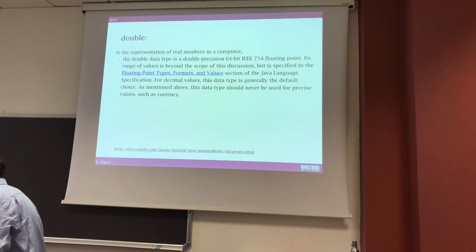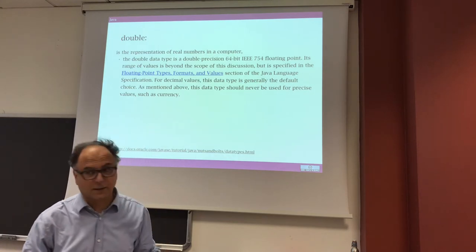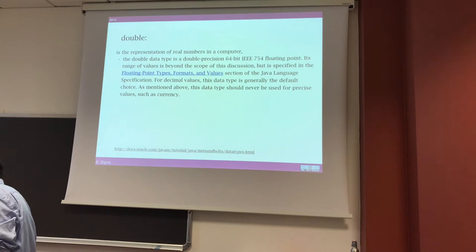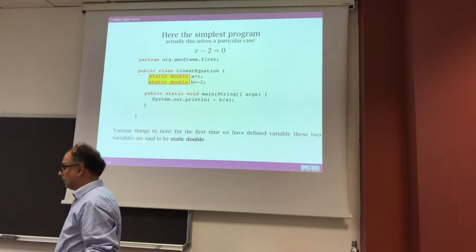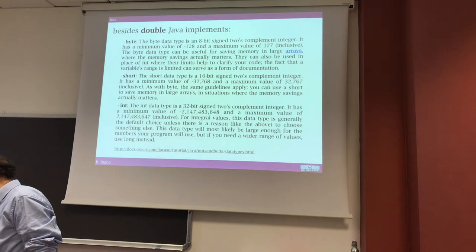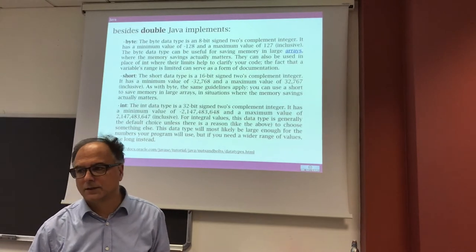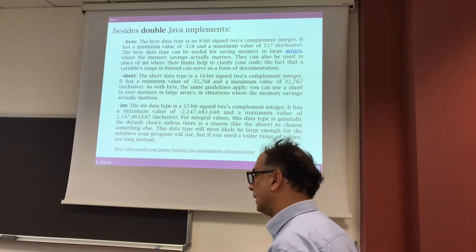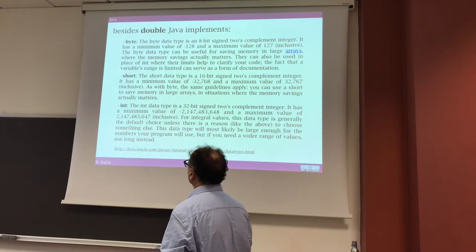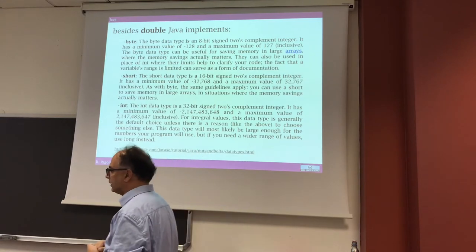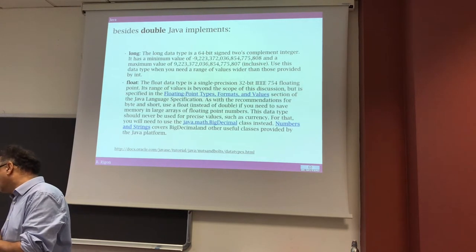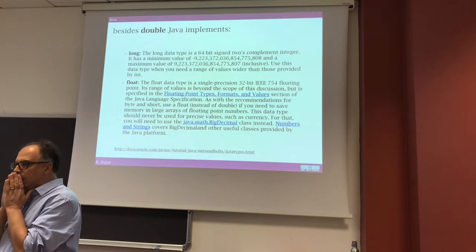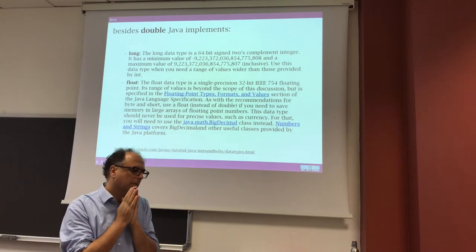One thing we haven't seen before is declaring a number as double. A double-precision number is a 64-bit type. There are other primitive types in Java: byte is 8 bits, short is 16 bits, int is 32 bits, and long is a longer integer. There's also float.